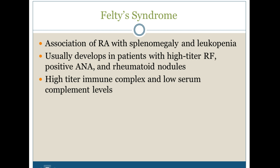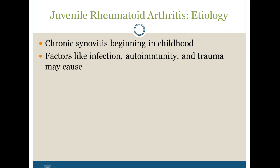Another type is Felty's syndrome — an association of rheumatoid arthritis with splenomegaly and leukopenia. It usually develops in patients with a high-titer rheumatoid factor, a positive ANA, and rheumatoid nodules. We see high-titer immune complexes and low serum complement levels with Felty's syndrome.